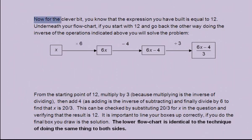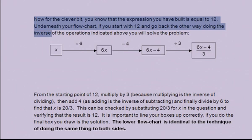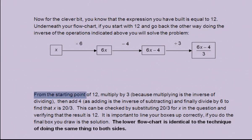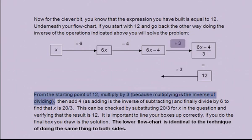Now for the clever bit. You know that the expression you have built is equal to 12. Underneath your flowchart, if you start with 12 and go back the other way, doing the inverse of the operations indicated above, you will solve the problem. From the starting point of 12, multiply by 3, because multiplying is the inverse of dividing. 12 times 3 is 36.